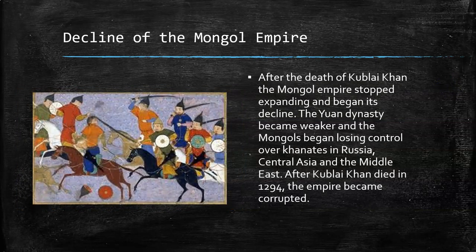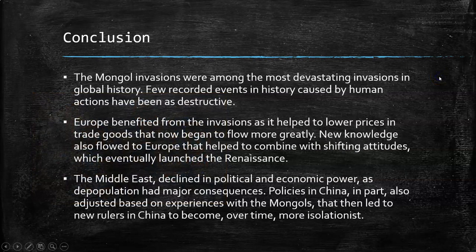The Mongols did not last very long. After the death of Kublai Khan, the Mongol Empire stopped expanding and began to decline. The Khanates — the divisions — started losing control and the empire became corrupted. From bell to bell, we're talking about 150 years. Hopefully from these last two days you have a good overview of the Mongols and their significance before you put some details into it.